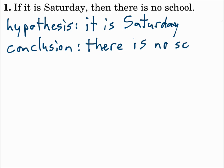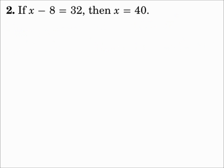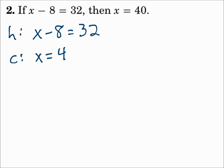If hypothesis, then conclusion. Number 2: If x minus 8 equals 32, then x equals 40. The hypothesis is x minus 8 equals 32. The conclusion is x equals 40. Notice the word 'if' is not part of the hypothesis, and the word 'then' is not part of the conclusion.